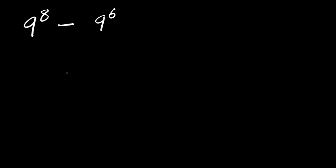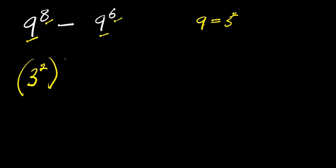Hello, how to evaluate without a calculator: 9 to the power of 8 minus 9 to the power of 6. Now remember 9 is a perfect square, which is 3 to the power of 2. So we are going to have 3 to the power of 2 raised to the power of 8, minus 3 to the power of 2 raised to the power of 6.